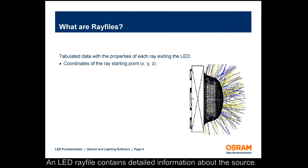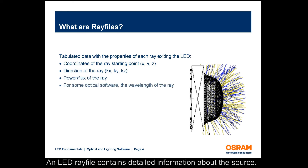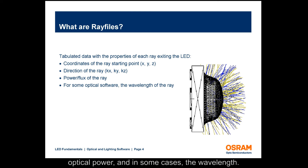An LED ray file contains detailed information about the source. Each ray in the file contains its starting coordinate, ray vector, optical power, and in some cases, the wavelength.